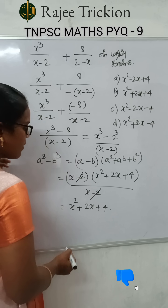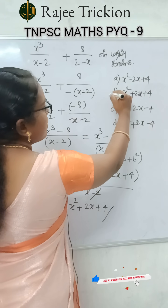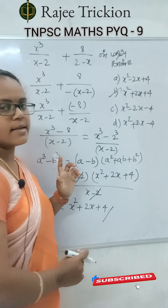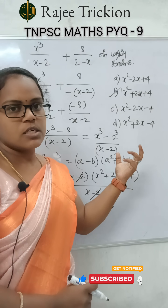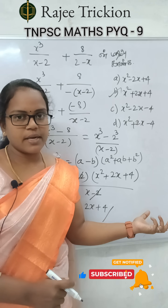The final answer is x² plus 2x plus 4. So this is the final answer, and the answer is equal to option B. If you have any doubts, please comment. Thank you.